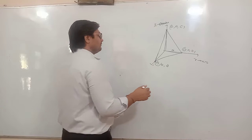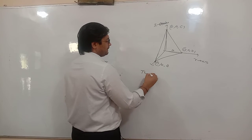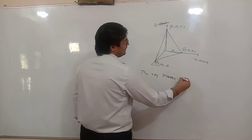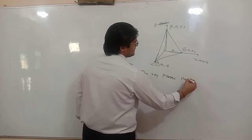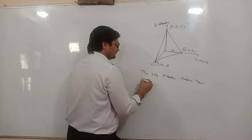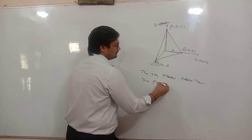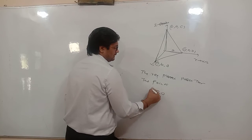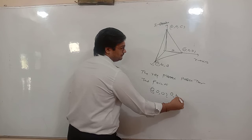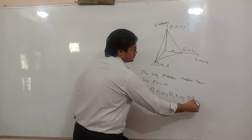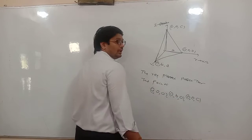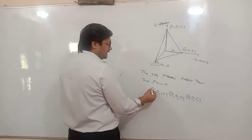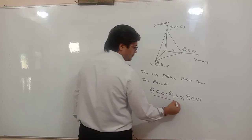Overall, we can say the required plane passes through three points: A(a, 0, 0), then (0, b, 0), and then (0, 0, c).